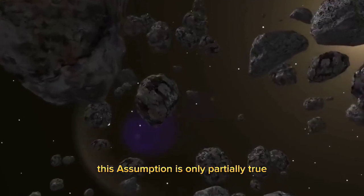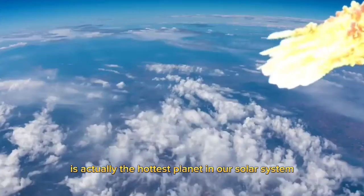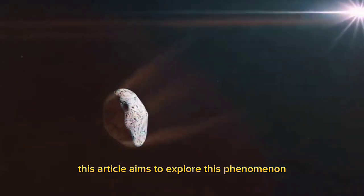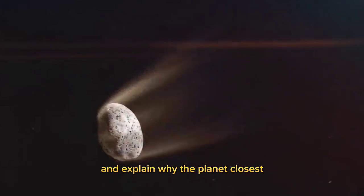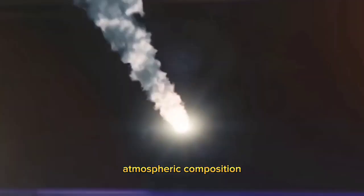This assumption is only partially true, and it might be surprising to learn that Venus, the planet next to Mercury, is actually the hottest planet in our solar system. This video aims to explore this phenomenon and explain why the planet closest to the Sun isn't necessarily the hottest.